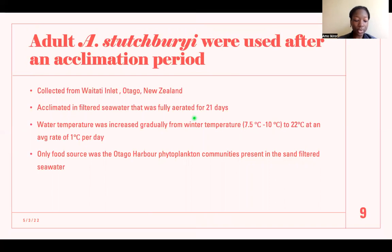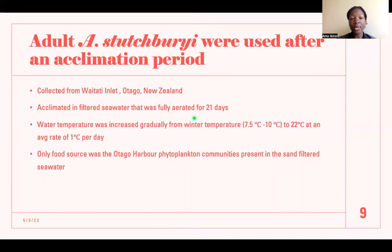The experiment used adult Austrovenus after an acclimation period of 21 days, during which they were kept in a tank of filtered seawater that was fully aerated. The water temperature was increased gradually, and the only food source available was phytoplankton present in the water from which they were collected. They were collected from Waitati Inlet, Otago, New Zealand.